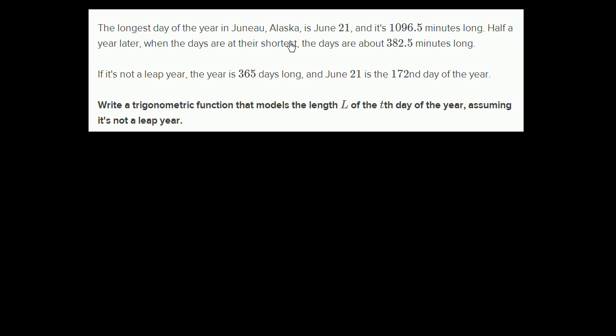The longest day of the year in Juneau, Alaska is June 21st, and it's 1096.5 minutes long. Half a year later, when the days are at their shortest, the days are about 382.5 minutes long. If it's not a leap year, the year is 365 days long, and June 21st is the 172nd day of the year.